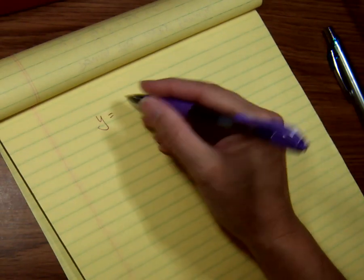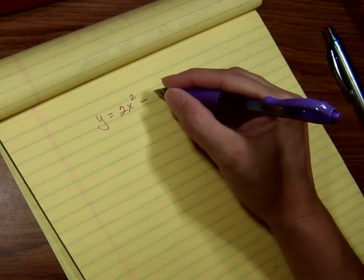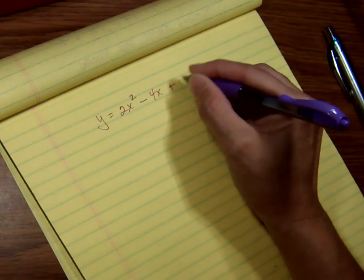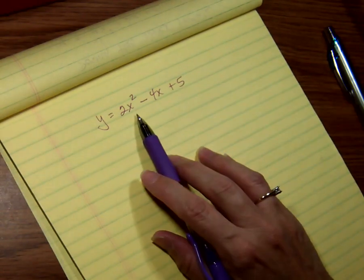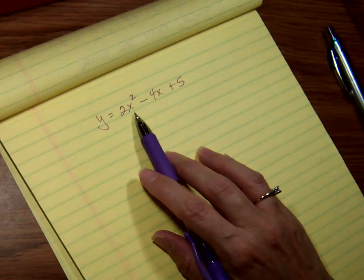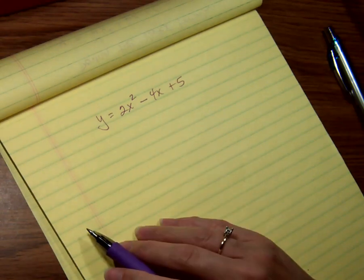All right, let's say we have an equation that looks like y equals 2x squared minus 4x plus 5. Now we know that it's a quadratic because the highest power is 2, and we want to be able to graph this, but our equation is not in vertex form.